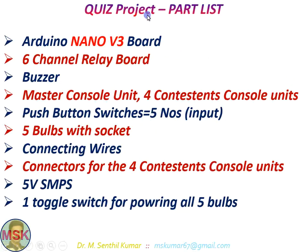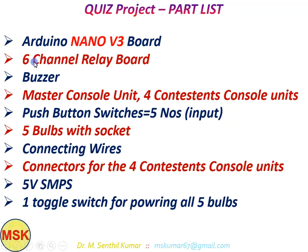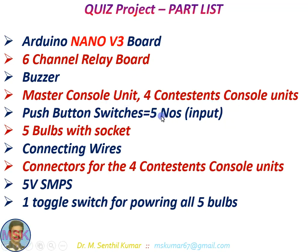Now let us see the various parts I used to make this project. I used an Arduino Nano V3 board, a six-channel relay board — four channels for the four contestant bulbs, one for the master console bulb, and another channel for the buzzer. I also used a buzzer, a master console unit, four contestant console units, push buttons — five in total, four for contestants and one for master — and five bulbs with sockets, four for contestant modules and one for the master console module.